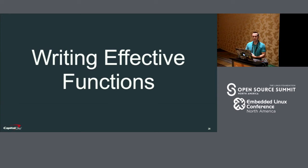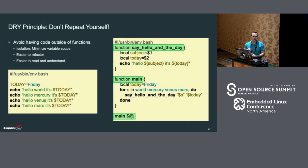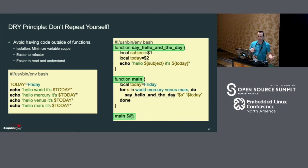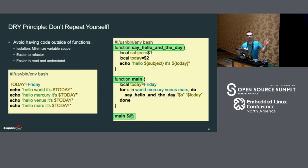Now I'm going to discuss principles of writing effective functions. The first is the DRY principle — don't repeat yourself. When I write a script, I avoid having any code outside of a function except that last line where I'm running the main function. I find that this makes it easier to understand and easier to refactor later.